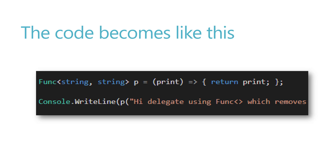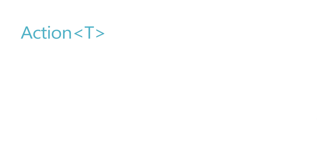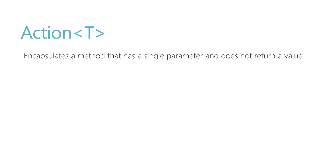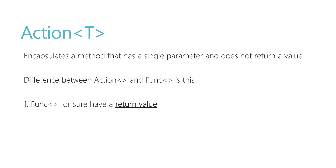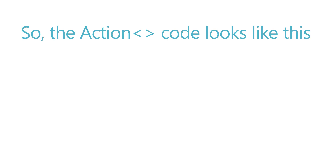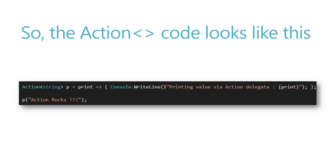The Func delegate looks something like: Func<string, string> p = print and return printer's print value — whatever value you pass in as a parameter, it returns that value. For Action delegates, it is Action<T> with no TResult — it encapsulates a method that has a single parameter and does not return a value. The Action code looks like: Action<string> p = print, and you pass in the value to print, then call p with that value.